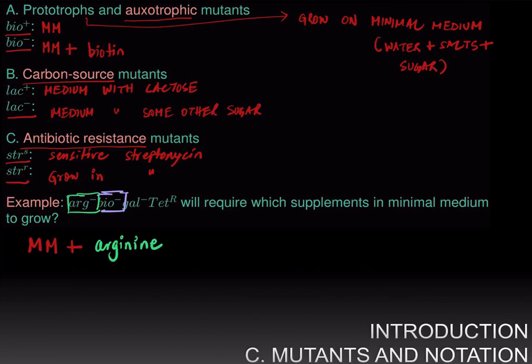This strain is also biotin minus, and that means this is another auxotrophic mutant, and it lacks the ability to synthesize biotin, and therefore, we must supplement it with biotin. Now, this mutant is gal minus, and that means it lacks the ability to metabolize galactose or utilize galactose as a carbon source. We don't need to supplement the minimal medium with galactose, because this bacterium can't use galactose anyway. Minimal medium usually contains glucose, and therefore, this strain will be able to grow just fine in minimal medium, since minimal medium is not based on galactose anyway.